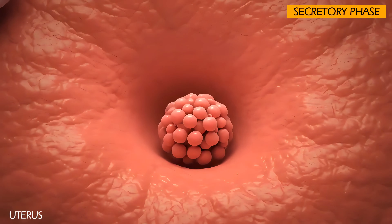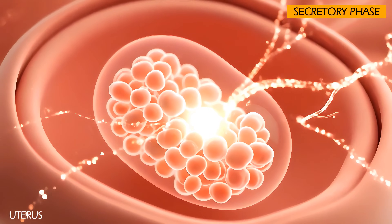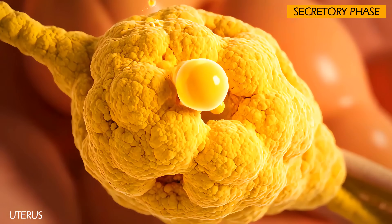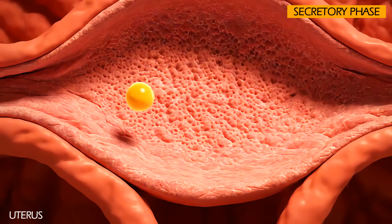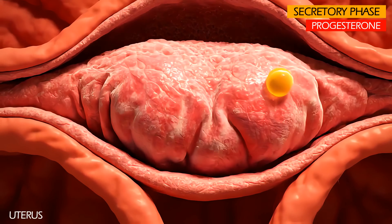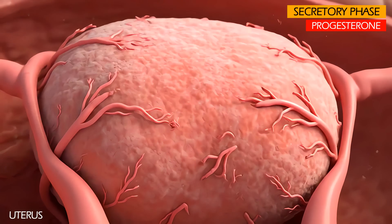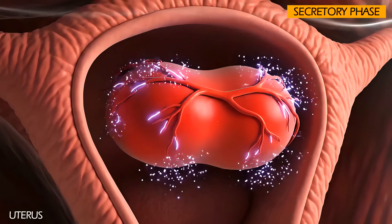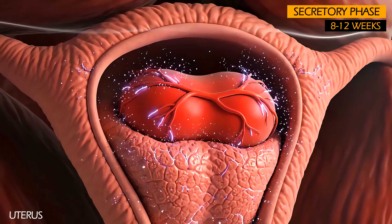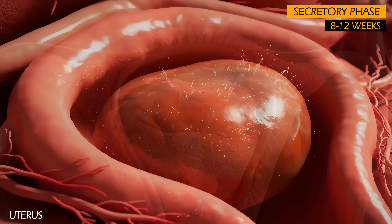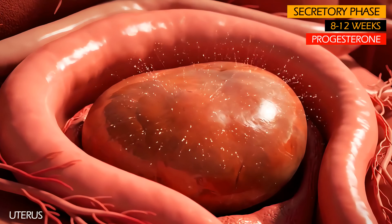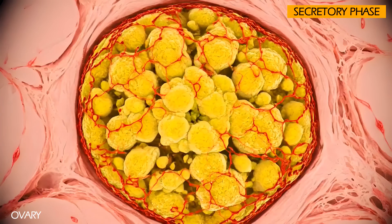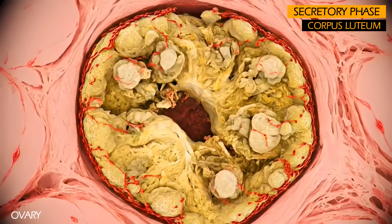If fertilization and implantation occur, the developing embryo begins to produce the human chorionic gonadotropin hormone, HCG. This hormone signals the corpus luteum to continue producing progesterone, which is essential for maintaining the uterine lining and supporting the developing embryo and fetus during the first 8 to 10 weeks of gestation. Around the 8th to 12th week of pregnancy, the placenta becomes sufficiently developed to take over as the primary source of progesterone production. Consequently, the corpus luteum's role diminishes and it gradually degenerates.